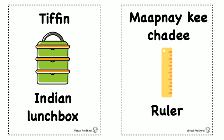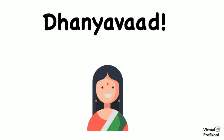And last one is ruler. A ruler is maapne ki chadi. Maapne ki chadi. Try it again: maapne ki chadi. Maapne ki chadi is a ruler. Great work! Now you have a new vocabulary set of school supplies — tools you probably use a lot in your everyday life. Dhanyavaad for joining me. I'll see you in class.